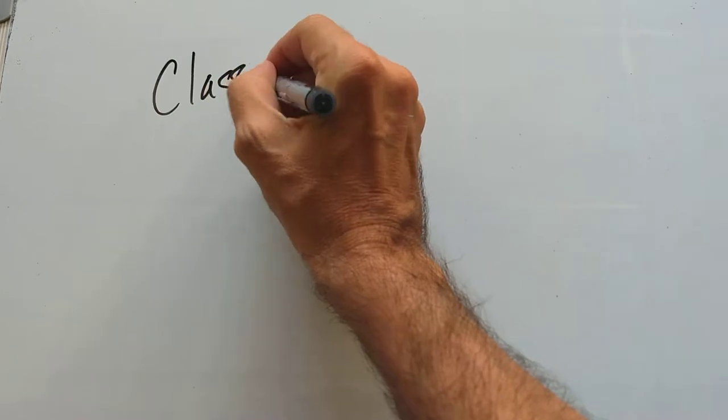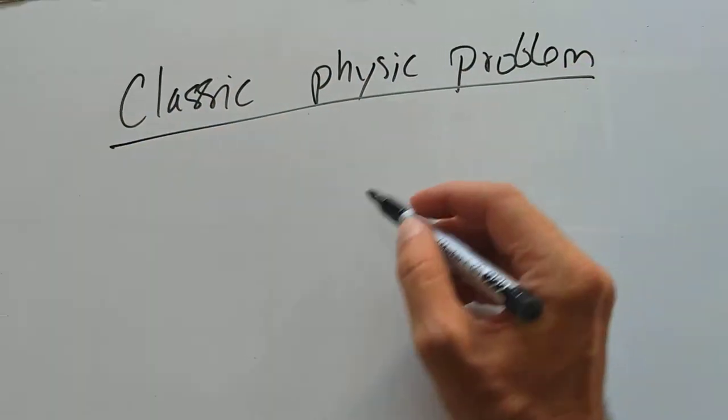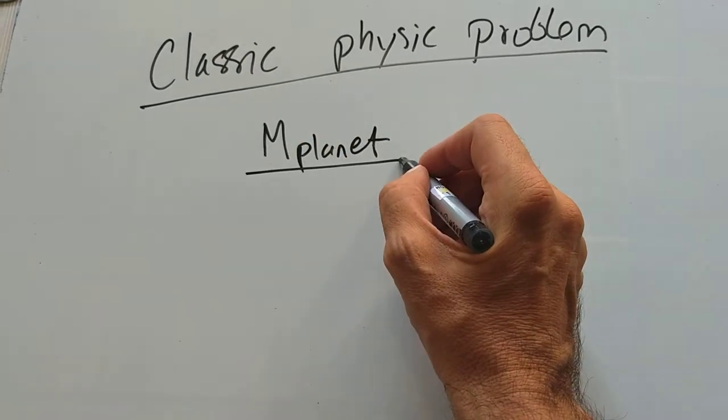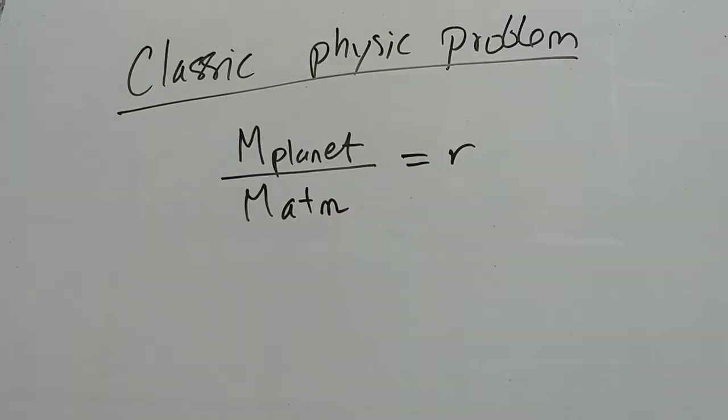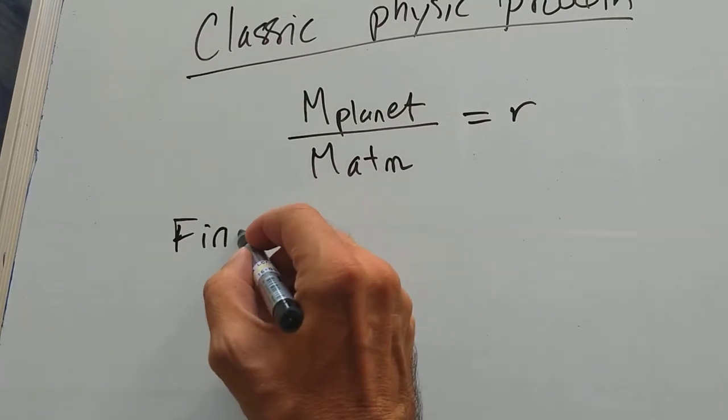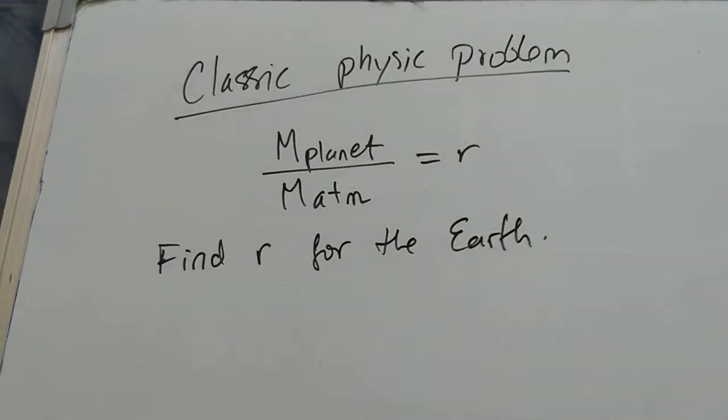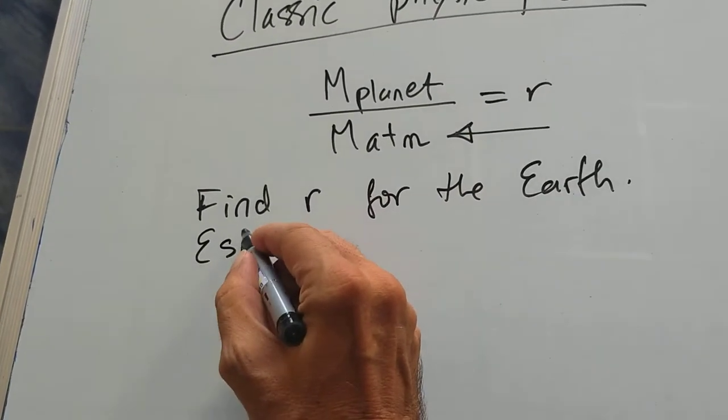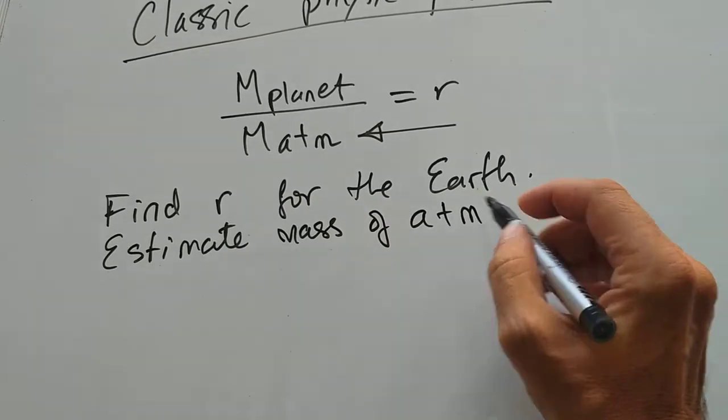Okay everyone, it's time for another classic physics problem. This physics problem is about calculating the mass of a planet and dividing it over the mass of the atmosphere of the planet. We'll call this ratio R, so we want to find R for the Earth. That's an interesting problem. We're going to have to estimate the mass of the atmosphere. That's the key to this thing.